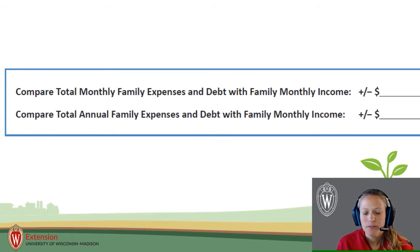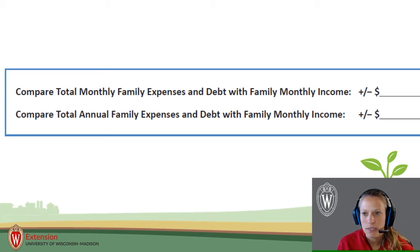Finally, on page 15 of the workbook, you should compare the total monthly and annual family expenses and debt payments with family monthly and annual income. These two worksheets will provide you with estimated family expenses that will not be paid by the farm and income that may or may not support these expenses. Your next step would be to determine if your income and expenses will be increased or decreased during your transition and how this may impact the farm in the future.